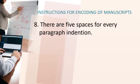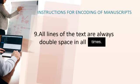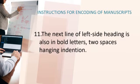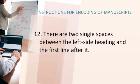Number 8, there are 5 spaces for every paragraph indention. For number 9, all lines of the text are always double spaced at all times. Number 10, the left side heading is in bold letters, and its distance from the last line before it is 3 single spaces. Number 11, the next line of the left side heading is also in bold letters, with 2 spaces hanging indention.